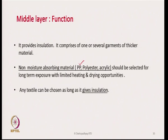The function of the middle layer is simply to provide insulation — it comprises one or several garments of thicker material. Non-moisture-absorbing materials such as polyester, polypropylene, and acrylic should be selected, especially for long-term exposure with limited heating and drying opportunities. These three synthetic fibers can be used here; their advantage is low density — polypropylene at 0.91 g/cm³, polyester at 1.38, acrylic at around 1.14–1.18 — making them lightweight compared to other materials.